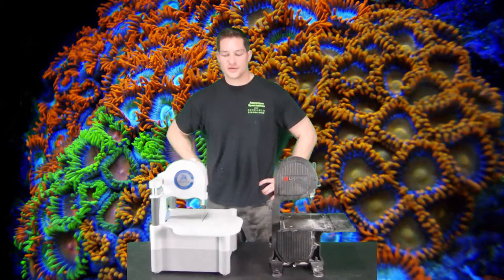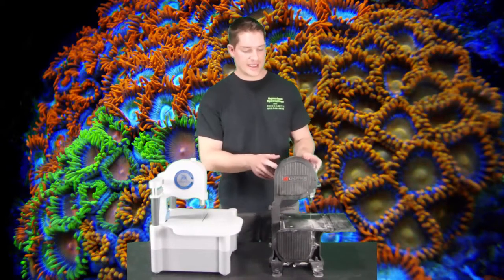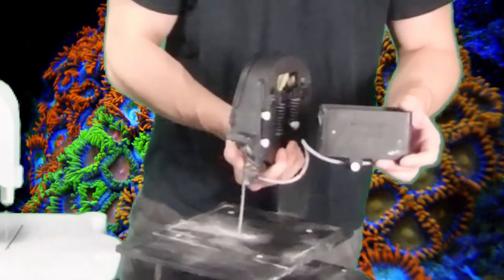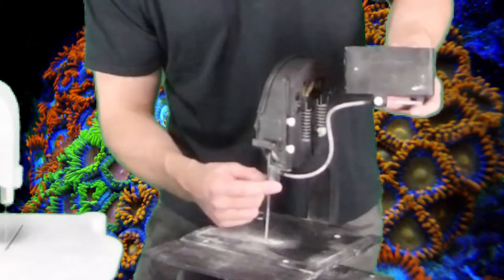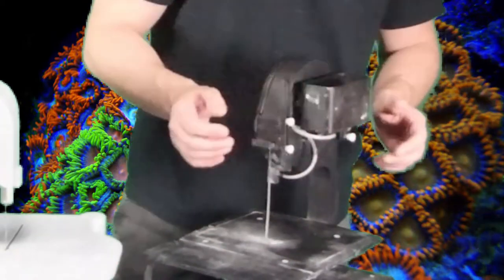Since they're both wet saws, the water in the Inland is contained in the back behind the pulley. And there's an adjustment screw here to adjust the flow to how fast it falls down on the blade.